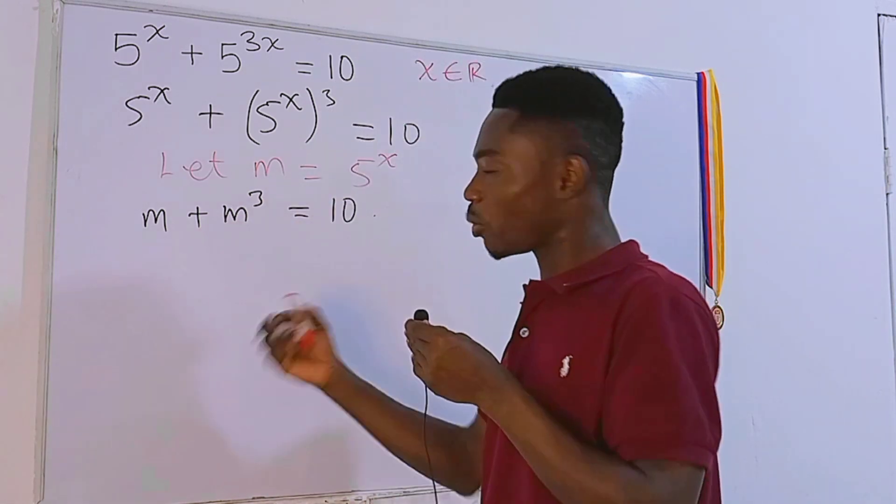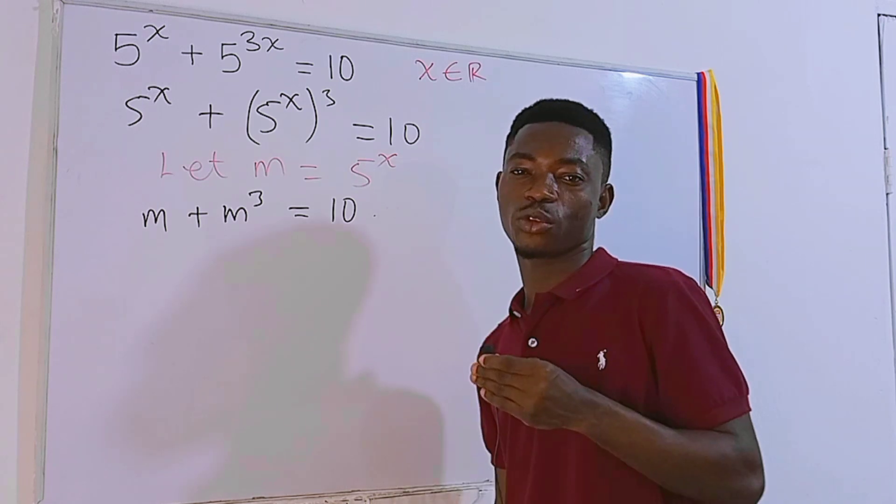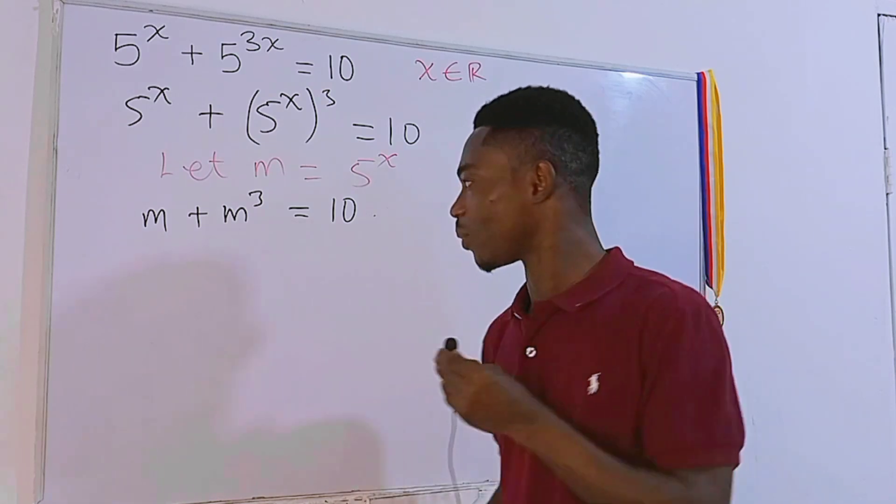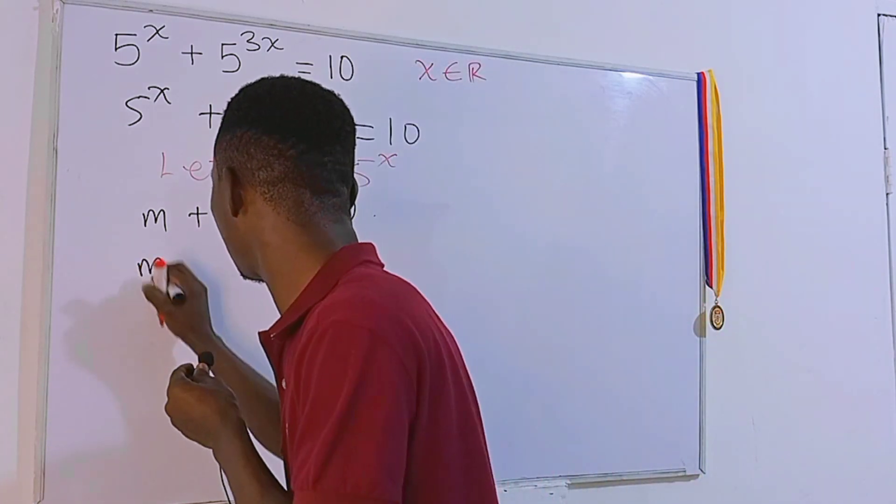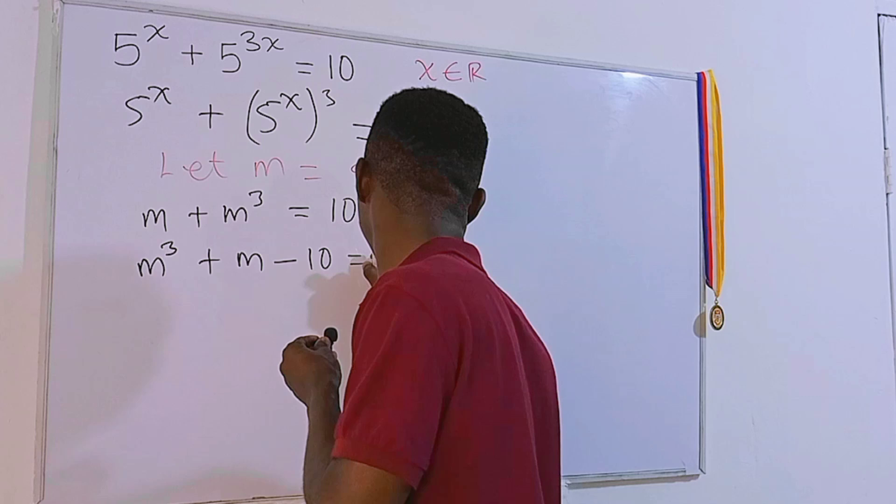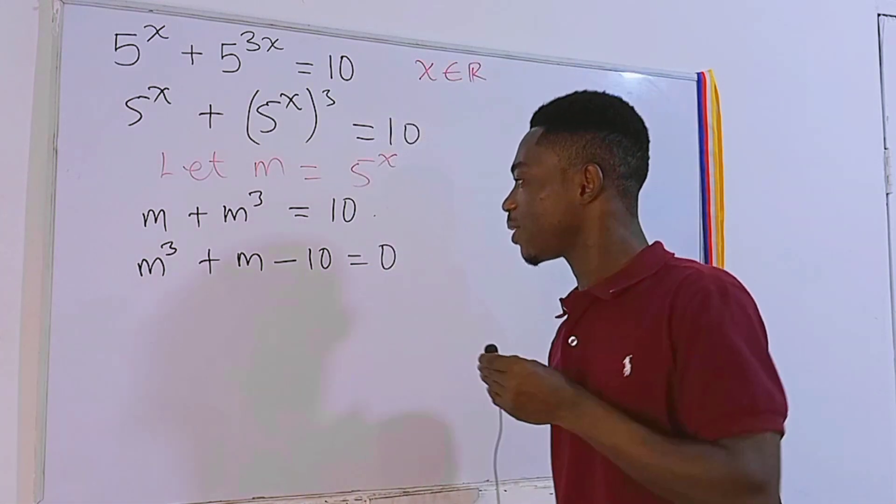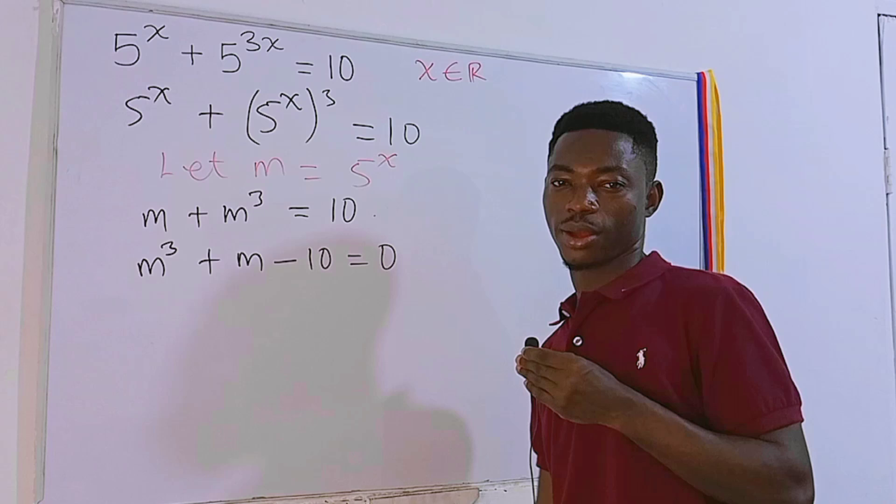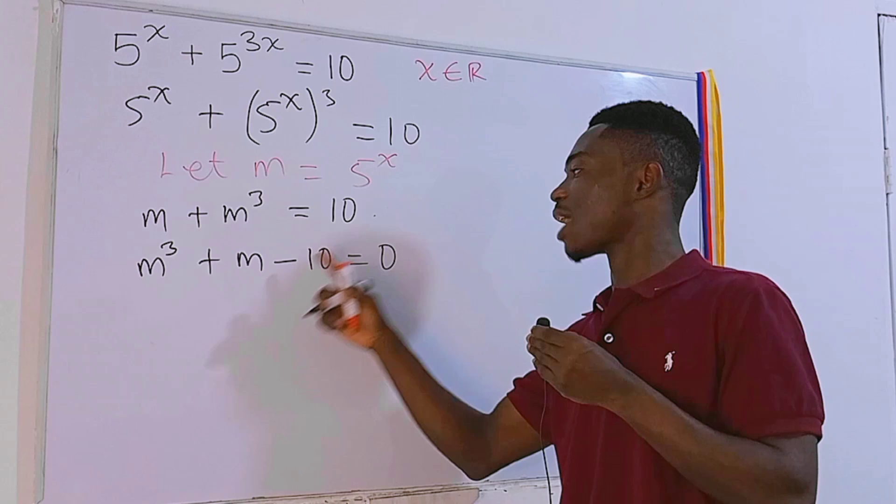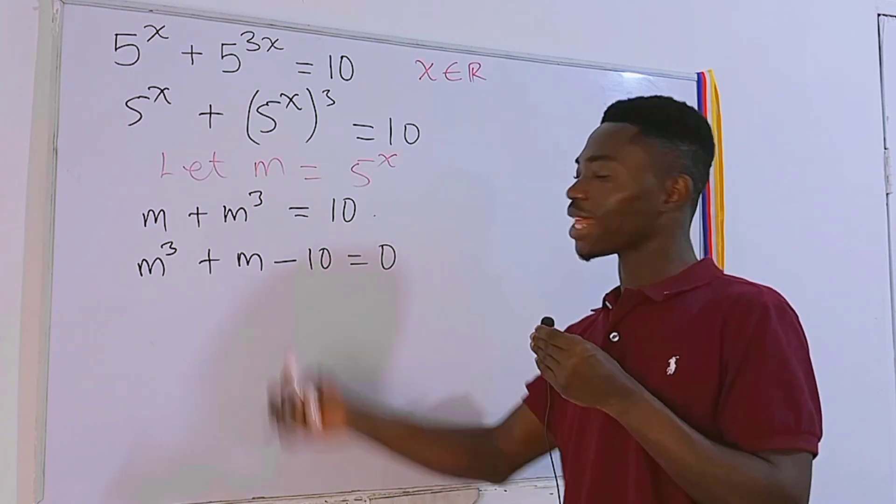This is a cubic equation. Anytime you want to solve a cubic equation, it's advisable to equate everything to zero. So this equation will now be m³ + m - 10 = 0, a cubic trinomial. Of course this is really difficult to factorize, especially when the terms are 3.